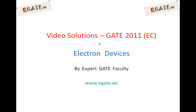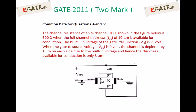Hello, we are discussing solutions for GATE 2011 ECE paper on the topic of electron devices. We are discussing a series of 2-mark questions. This is the 4th 2-mark question from GATE 2011. It is a common data question — first we will consider the first part, then go for the second. So first we will see the common data.